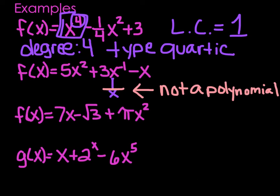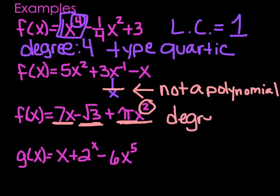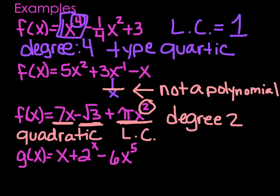The third one: 7x minus the square root of 3 plus pi x squared. Some of you might think it's not a polynomial because of those weird symbols, but square root of 3 is just a number, pi is just a number, so this is a sum of monomials. Our highest power is 2, so the degree is 2, making it quadratic. The leading coefficient is pi — don't be fooled, it's not 7 just because 7 is first. The leading coefficient goes on the highest power, and if you put it in standard form, pi would come first.